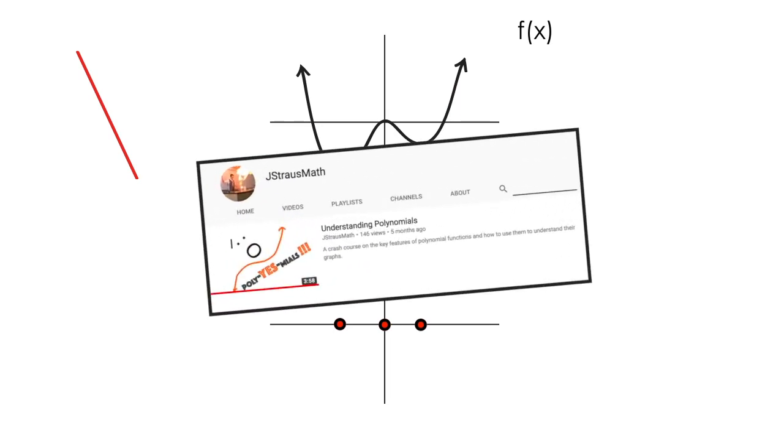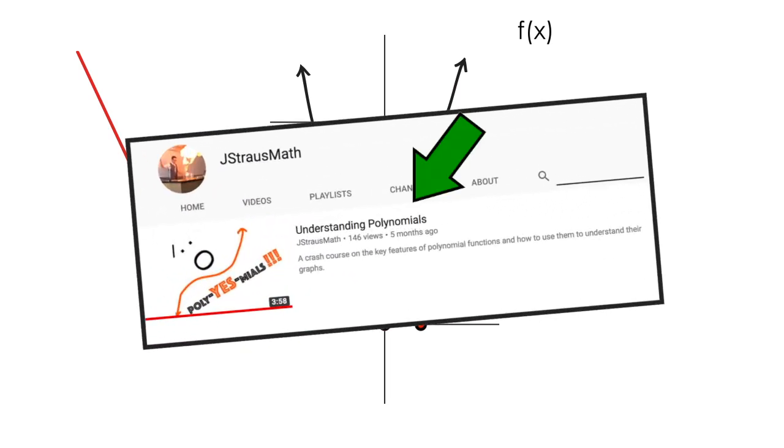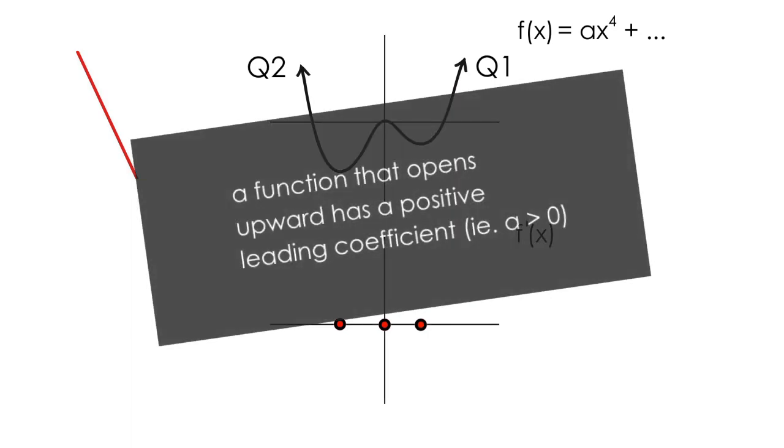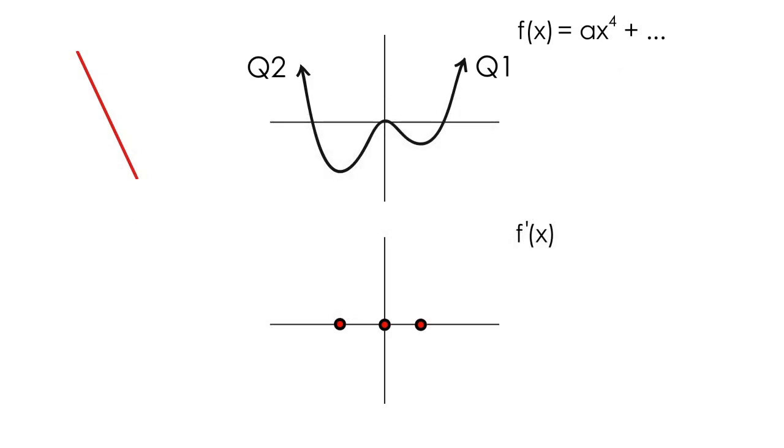The first is using our understanding of functions, specifically polynomials, as this is a quartic function, a polynomial of degree four, which starts in quadrant two and ends in quadrant one. We don't know much about this function as this is just a general example, but we do know the leading coefficient must be positive as this function opens in the upward direction. So how does all this help us graph the derivative?